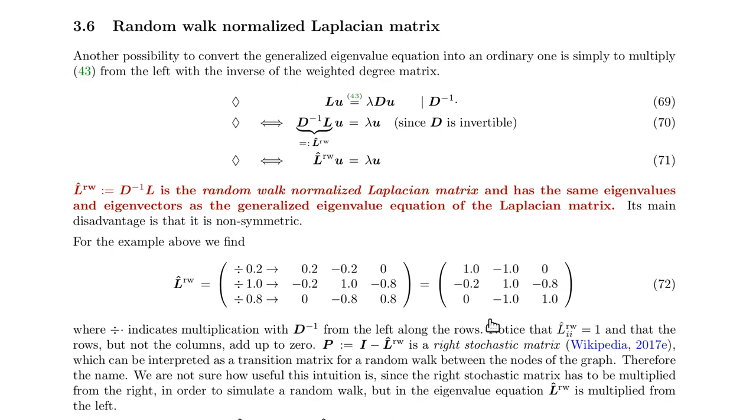It's called random walk normalized matrix, because this matrix can be used to simulate a random walk on a graph.